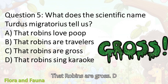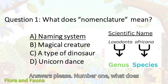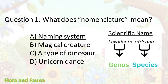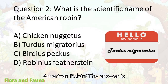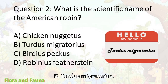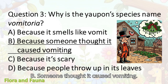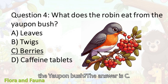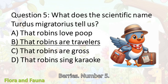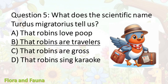Question five: What does the scientific name Turdus migratorius tell us? A) That robins love poop, B) That robins are travelers, C) That robins are gross, D) That robins sing karaoke. Answers: Number one — A, a naming system. Number two — B, Turdus migratorius. Number three — B, someone thought it caused vomiting. Number four — C, berries. Number five — B, robins are travelers. Migratorius means migratory.